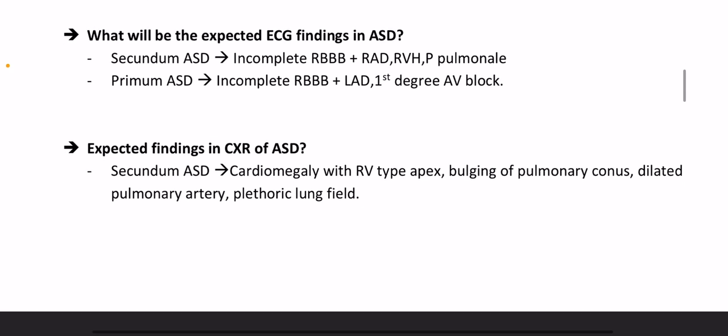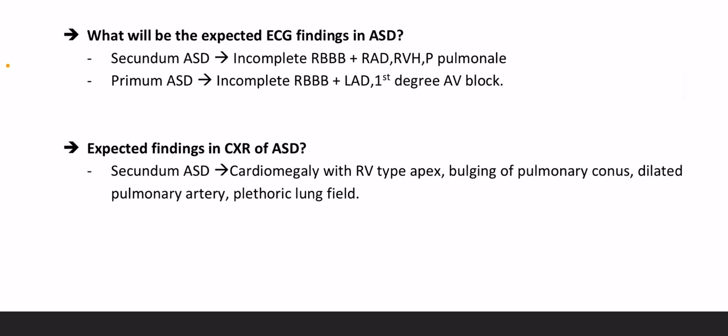What are the expected ECG findings in ASD? In secundum ASD: incomplete RBBB with right axis deviation, right ventricular hypertrophy, and P pulmonale. In primum ASD: left axis deviation and first-degree AV block.